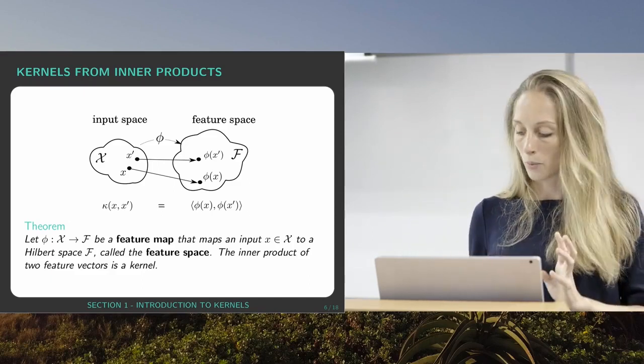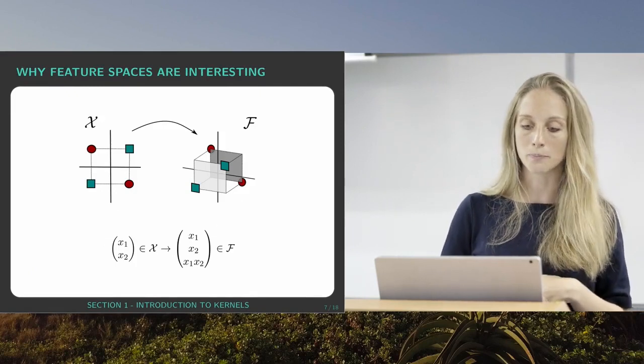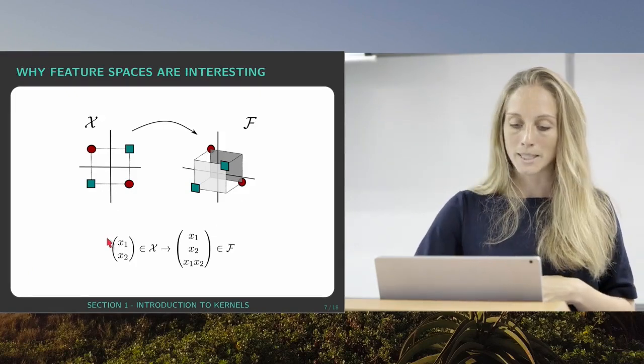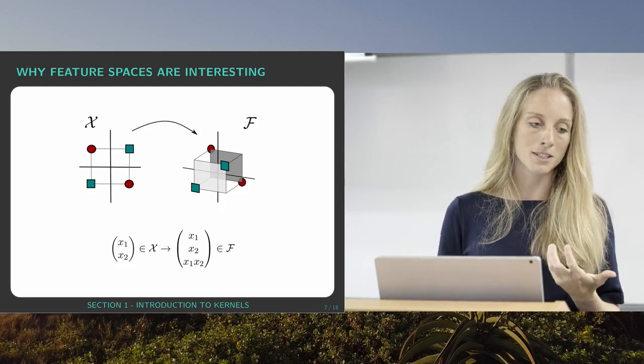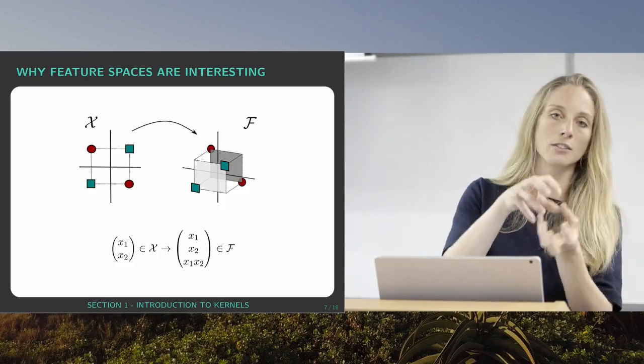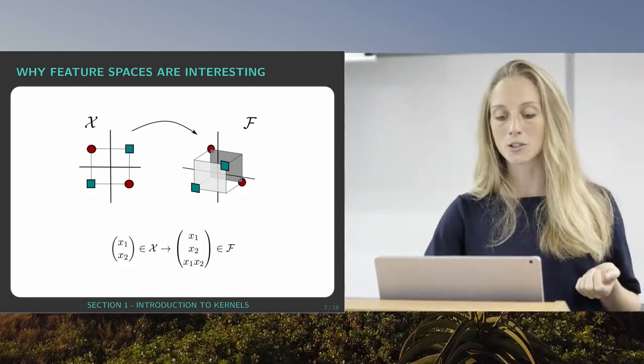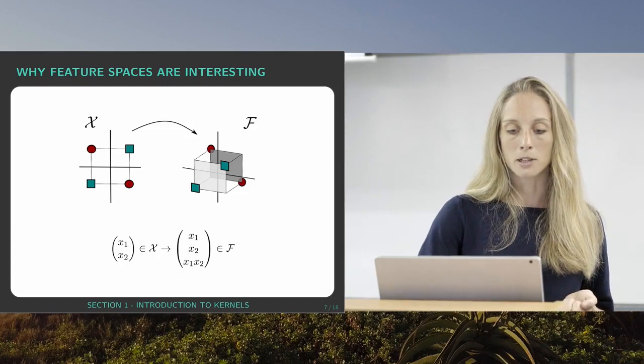Now, I want to say very quickly why these feature maps actually become very important and also very important for machine learning. It's a totally different way of thinking about machine learning methods than, for example, in neural networks, where we extract features by shrinking the feature space. In this case, we very often expand the feature space.